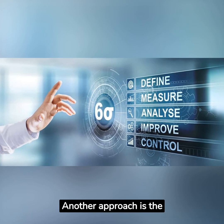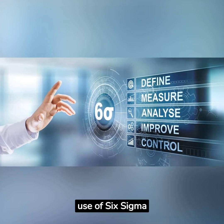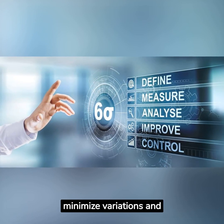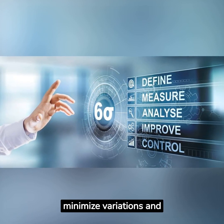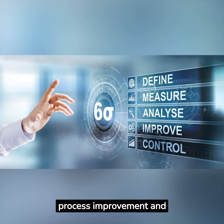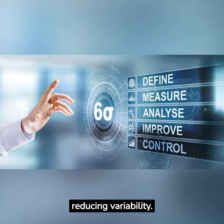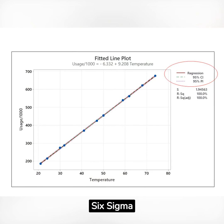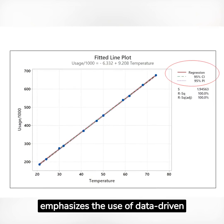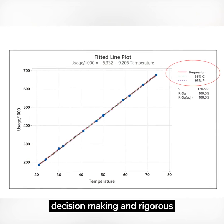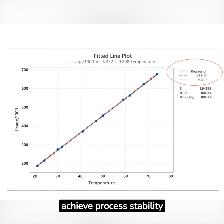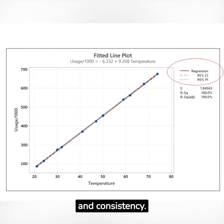Another approach is the use of Six Sigma methodologies, which aim to minimize variations and defects by focusing on process improvement and reducing variability. Six Sigma emphasizes the use of data-driven decision-making and rigorous problem-solving techniques to achieve process stability and consistency.